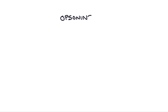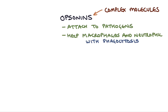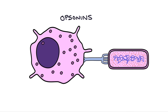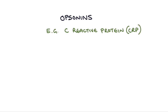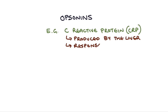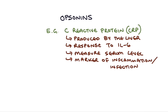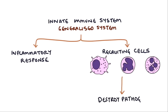I want to take a quick look at opsonins as these are very important in the immune system. Opsonins are complex molecules that attach themselves to pathogens and make it easier for macrophages and neutrophils to recognize and phagocytose that pathogen. I think of them a bit like a fork that spears the pathogen so that a macrophage can attach to the other end of the fork and then use it to eat the pathogen. An example of an opsonin that you may have heard of is C-reactive protein or CRP. CRP is produced by the liver in response to interleukin 6, and we actually measure the level of CRP in our patients to assess how much inflammation there is in the body — it can be a really good indicator of the severity of the infection. So that summarizes the innate immune system: a generalized system that recognizes and responds to an invading pathogen by causing an inflammatory response and recruiting cells that destroy the pathogens by phagocytosis.